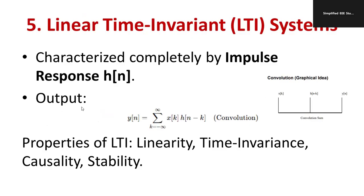Convolution is defined as: y(n) = Σ x(k)·h(n-k), summed from k = -∞ to ∞. This allows you to combine two signals using the impulse response. Graphically, convolution represents the mixing of two signals. The properties of an LTI system include: linearity, time invariance, causality, and stability.